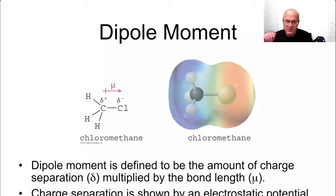Charge separation is shown by electrostatic potential maps, which is what you're seeing right here. Now in this type of map, the red part is the more negative; the blue and the cooler parts, the bluer parts, are the more delta positive side.